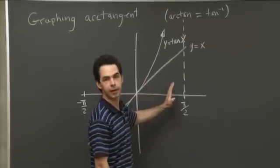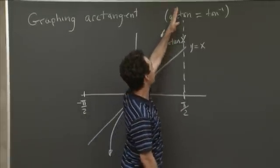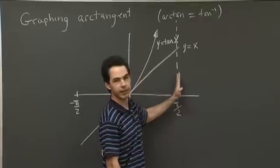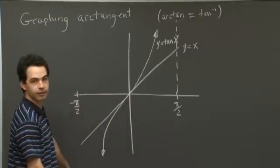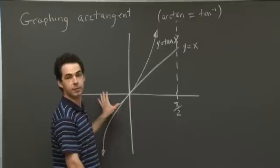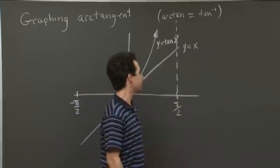So as x approaches pi over 2 from the right, tangent of x shoots off to infinity, getting closer and closer to this line. And it does something similar down here. And then, of course, it's a periodic function. So there are many copies of this.